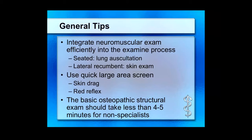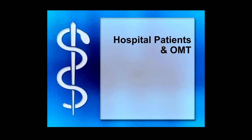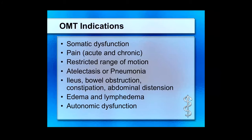For hospital patients you're actually going to perform OMT on, the indications are straightforward. If you've done a good job documenting your osteopathic findings during the H&P, you've already documented indications for performing OMT. You should document somatic dysfunction, any pain the patient reports, restricted range of motion noted on visual inspection or motion testing. Specific indications include atelectasis, pneumonia, bowel dysfunction, and autonomic dysfunction — things that are easy to document and occur in a large number, if not all, of your patients.